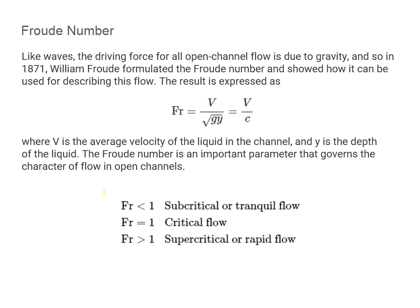If the Froude number is less than 1, the flow is classified as subcritical — in other words, tranquil. If the Froude number equals 1, it is referred to as critical flow. If the Froude number is greater than 1, it is known as supercritical or rapid flow. We can use the terms tranquil flow and rapid flow to broadly describe these regimes.